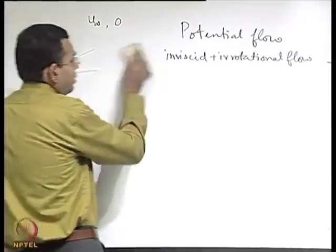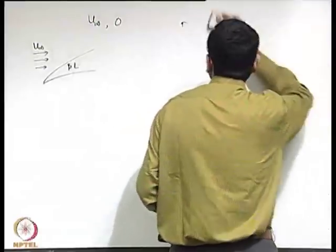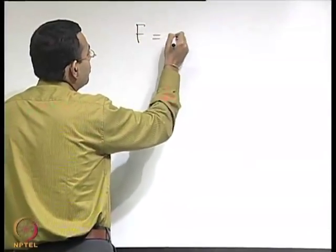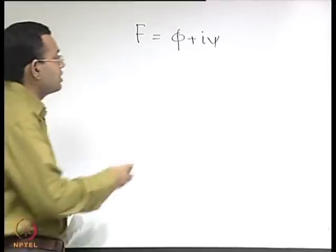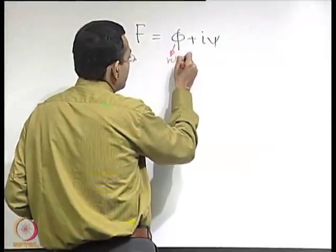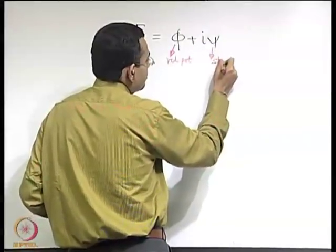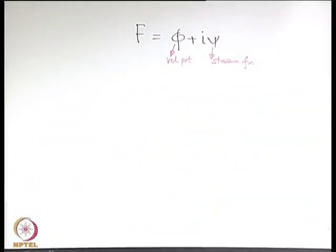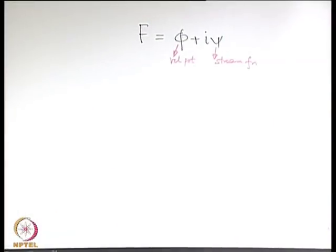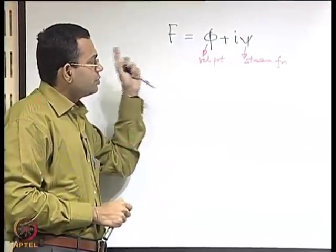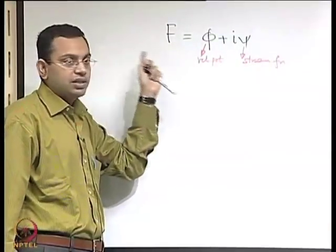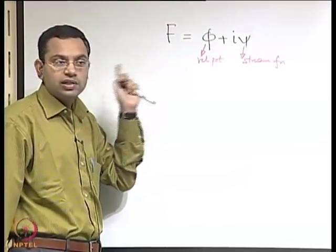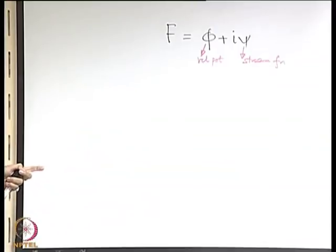We start by defining a complex potential function F = φ + iψ, where φ is the velocity potential and ψ is the stream function. We are talking about a two-dimensional, incompressible, irrotational flow, so that is the example we are taking.